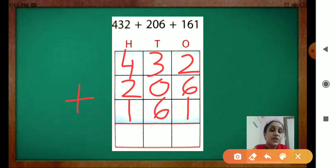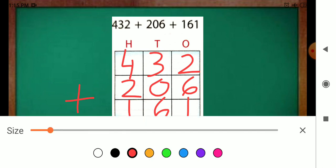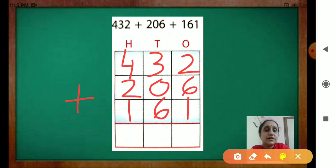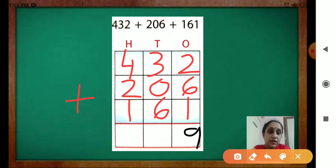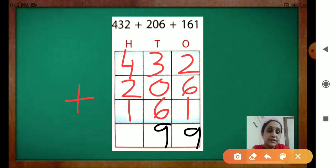Now start adding. 2 plus 6 is 8. 8 plus 1 — how much did you get? 9. Then 3 plus 0 is 3, and 3 plus 6 is 9. Now come to the 100s place: 4 plus 2 is 6, and 6 plus 1 is 7. So the answer is 799.